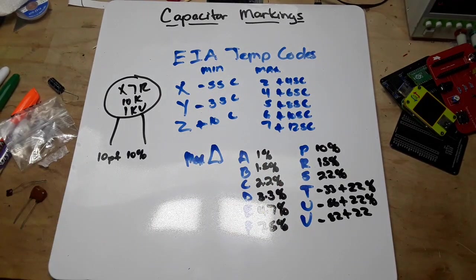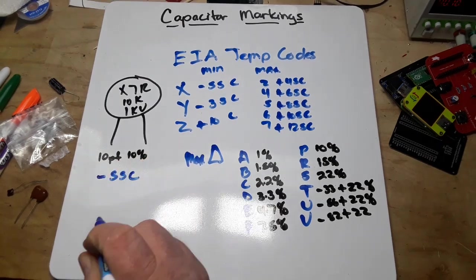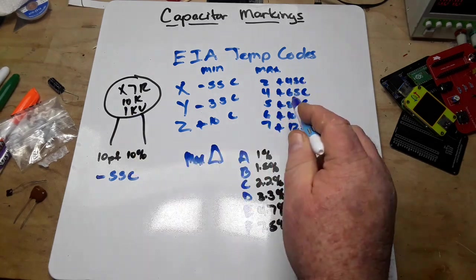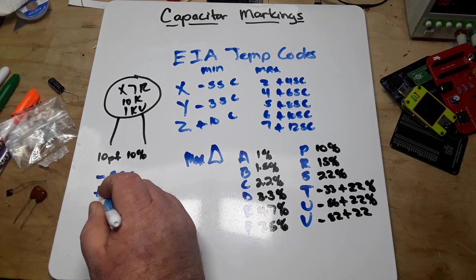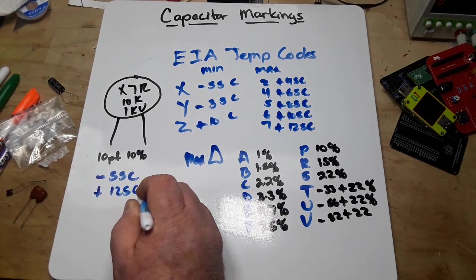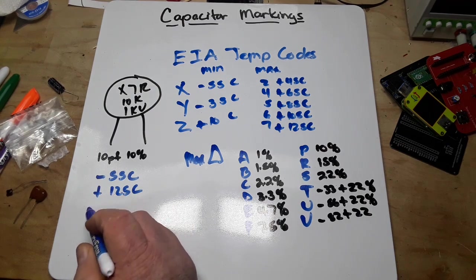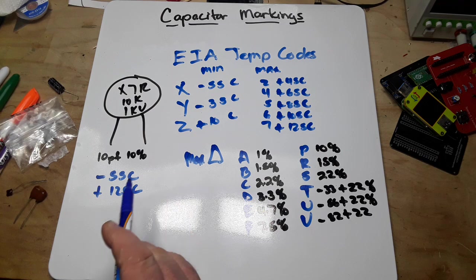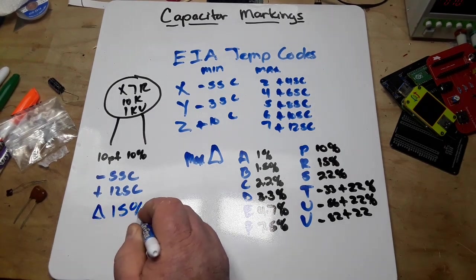Then we have - I'm sorry - we have 7, which is our maximum temperature of plus 125°C. And then we have our R, which is the maximum delta, the max change based on temperature, of 15%.